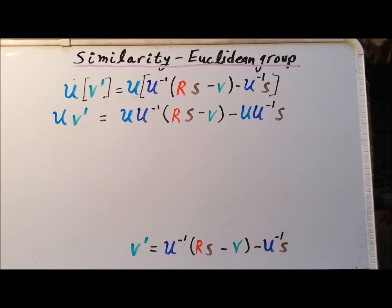And now we're going to use the fact that U times the inverse of U, by the definition of the inverse, is simply the identity operation. This gives us that U V prime is equal to R S minus V minus S.